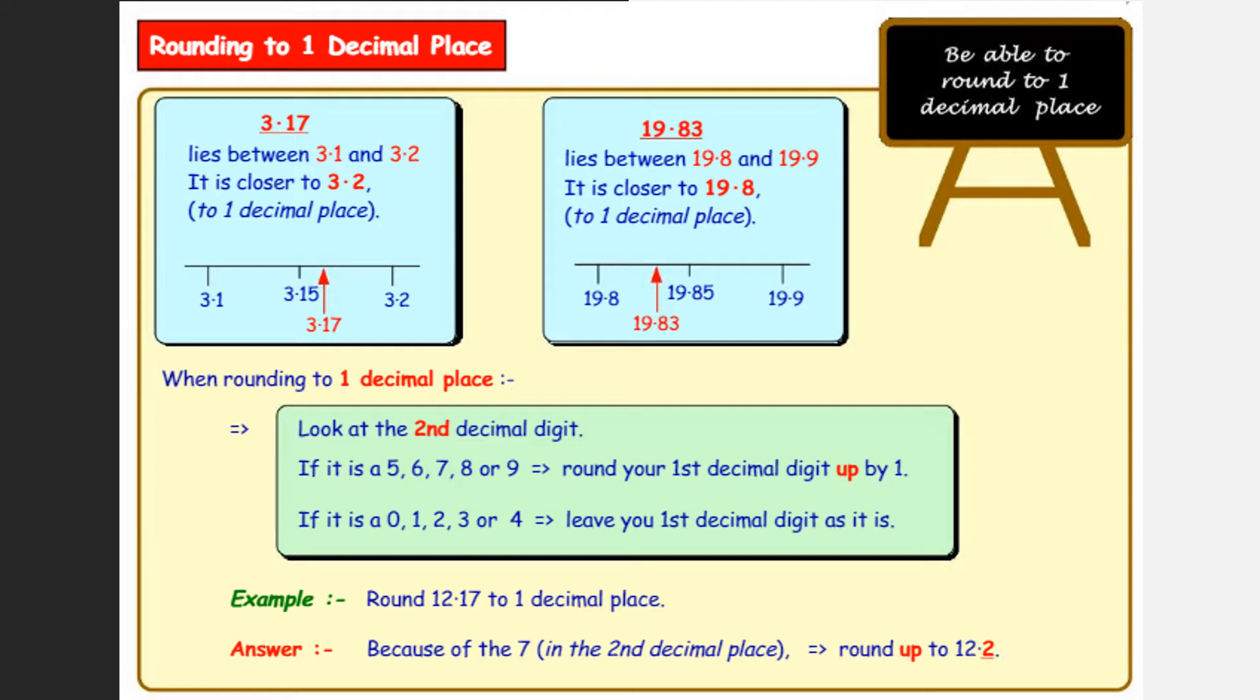You've got 19.83 or 19 pounds and 83 pence. 83 to the nearest 10, we would round that to 80, so that would be 19.8. When rounding to one decimal place, we look at the second decimal digit. So for example, in 3.17, only the seven matters. Seven is above five, so we're rounding up to 3.2.